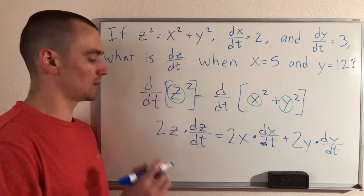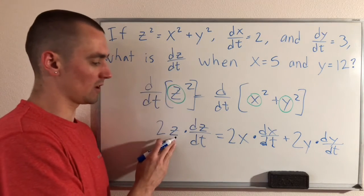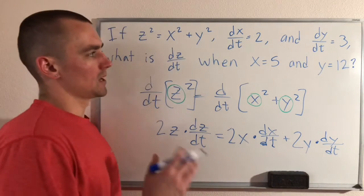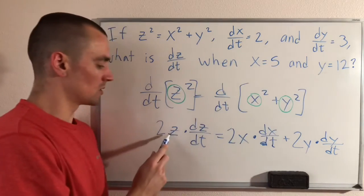Now what we can do is go ahead and plug in. Obviously, we're looking for dz/dt, but we can plug in values for z, x, dx/dt, y, dy/dt. Looking at what we were given, we already know dx/dt, dy/dt, x, and y, but we don't know z.